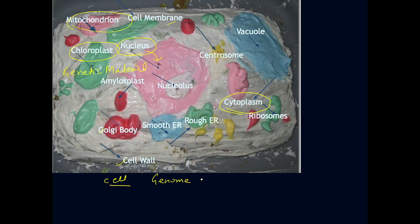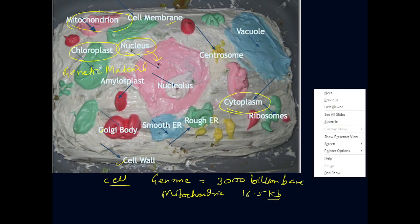If you take a human cell, the genome size — scientists have sequenced it — is roughly 3,000 billion bases, which is 3×10⁹ base pairs. If you consider human mitochondria specifically, it is around 16.5 kb, meaning about 10³ bases. See the huge difference in size.